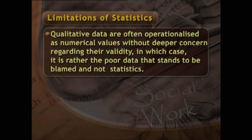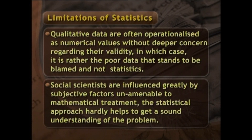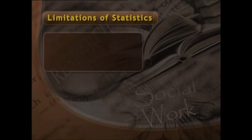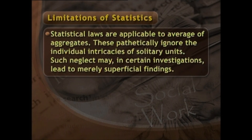Unfortunately, this is a pitfall many researchers fall into — qualitative data are often operationalized as numerical values without deeper concern regarding their validity, in which case it is the poor data that stands to be blamed and not statistics. Insofar as many problems of concern to social scientists are influenced greatly by subjective factors and are not amenable to mathematical treatment, the statistical approach hardly helps to get a sound understanding of the problem. It is worth noting that statistical laws are applicable to averages of aggregates.